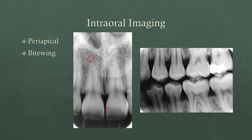For bite wings, it's really important that you have the right angulation so that you open up the contacts — the area where the teeth contact each other — because that's primarily what you're looking for in bite wing radiographs: caries, specifically radiolucencies that start to develop within the enamel of teeth. Any time you take an x-ray, you also want to look at the entire image, including bone levels at the alveolar crest of bone.